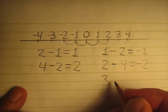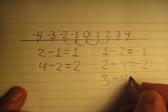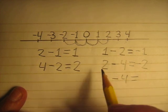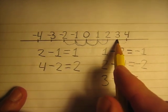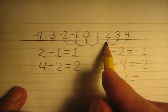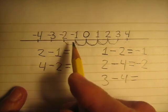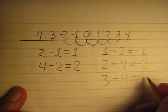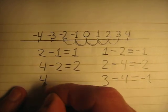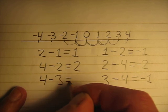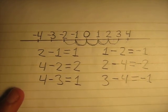How much is 3 minus 4? We start here and we move to the left, 4 steps: 1, 2, 3, 4. The answer is negative 1. Because 4 minus 3 is positive 1, and 3 minus 4 is negative 1.